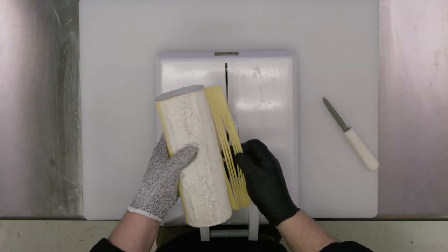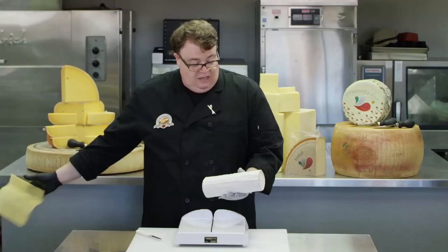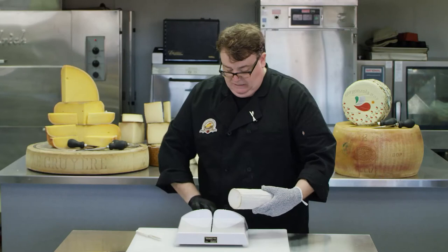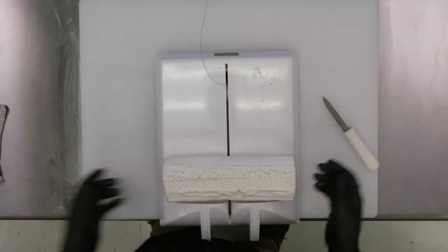You'll see this is basically like a synthetic hay, so we'll need to remove this as well. Now we have a lovely piece of bouche de cheve that we can start pre-cutting. We'll place that in the center of our board and remove the cut glove.